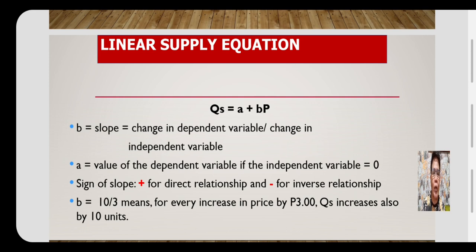Suppose that we have a slope value of 10 over 3. Since the numerator stands for the change in quantity and the denominator stands for the change in price, a slope of 10 over 3 means that for every increase in price by 3 pesos, quantity supplied also increases by 10 units.